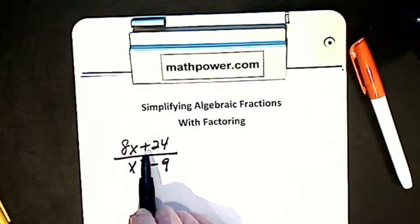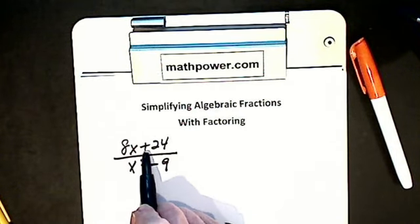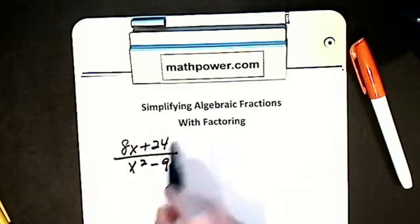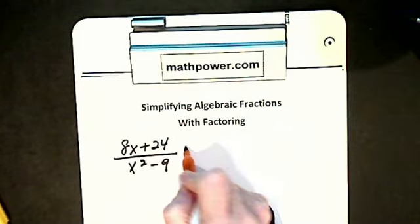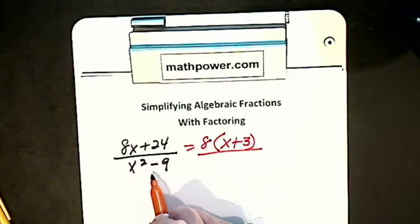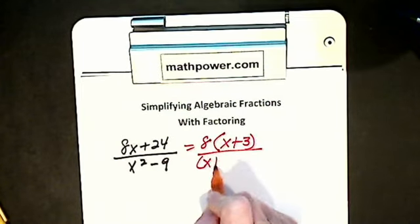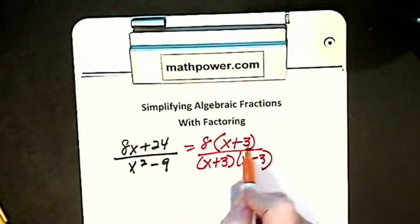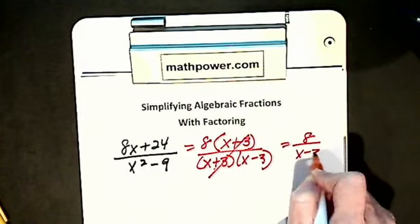Is it greatest common factor or difference of two squares? It can't be difference of two squares — difference has to have a minus, so once I see a plus sign there's no way. So it's greatest common factor: I factor out an 8, I get 8 times x plus 3. I look at my denominator — it's not a trinomial, only two terms. Is it greatest common factor or difference of two squares? It's difference of two squares: I get x plus 3 times x minus 3. My x plus 3's cancel, so I'm left with 8 over x minus 3.